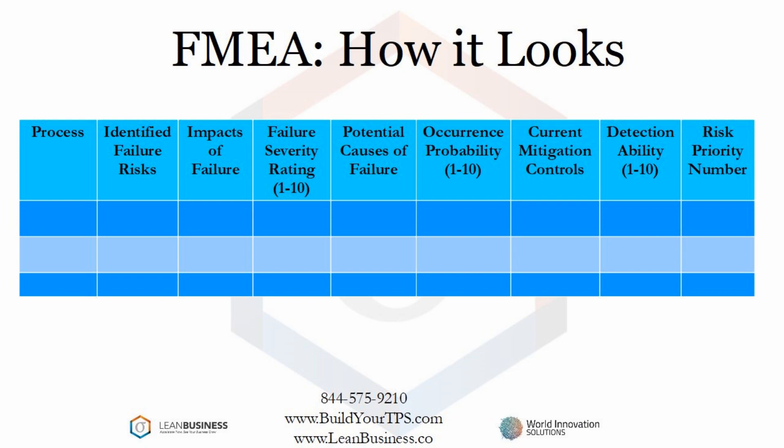Then, you list what you have in place to control the effects of the failure. The next step is to define an ability to detect the failure, should that failure occur. Lastly, the failure severity rating is multiplied with the occurrence probability and then the detection ability to come up with a risk priority number. This last number is used to compare against each identified failure risk, giving you guidance on where to direct the mitigation effort.